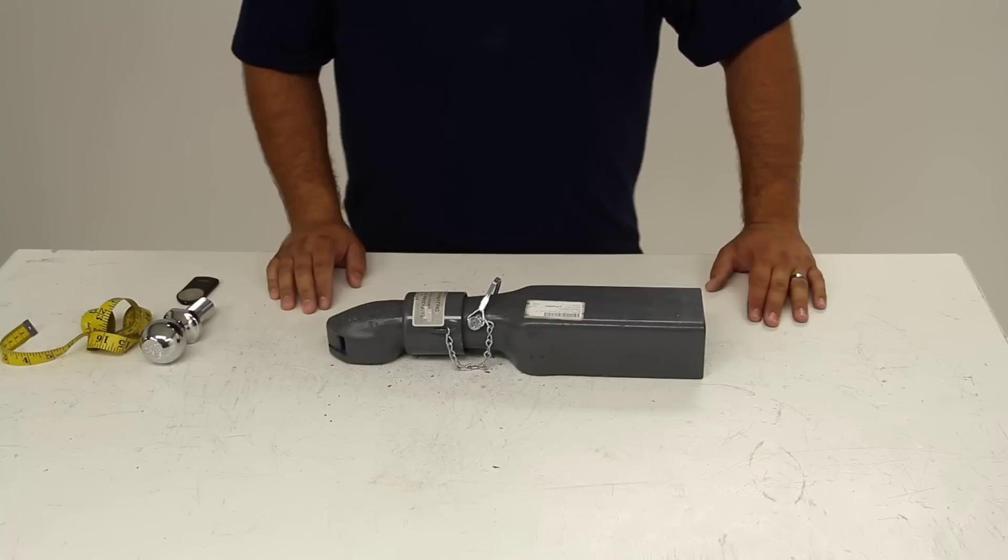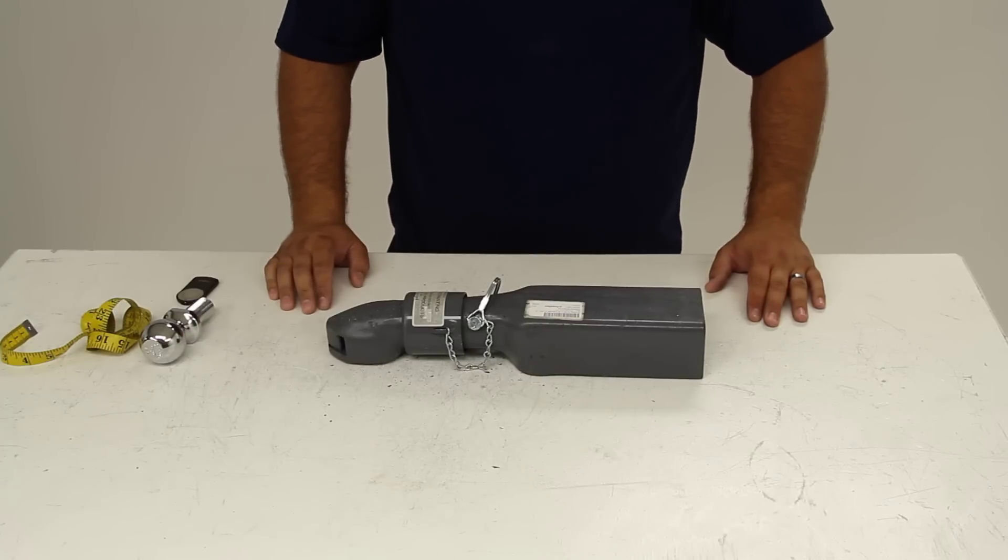And that's it for a quick look at the Bulldog Collar Lock Coupler with Pin, part number BD-028244.